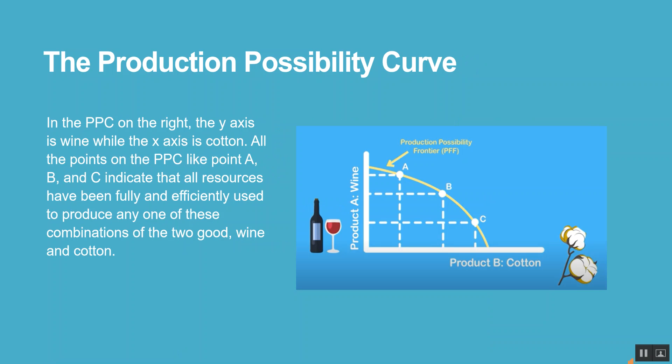Looking at the production possibility curve: on the PPC shown, the y-axis is wine while the x-axis is cotton. All the points on the PPC, like point A, B, and C, indicate that all resources have been fully and efficiently used to produce any one of these combinations of the two goods — wine and cotton.